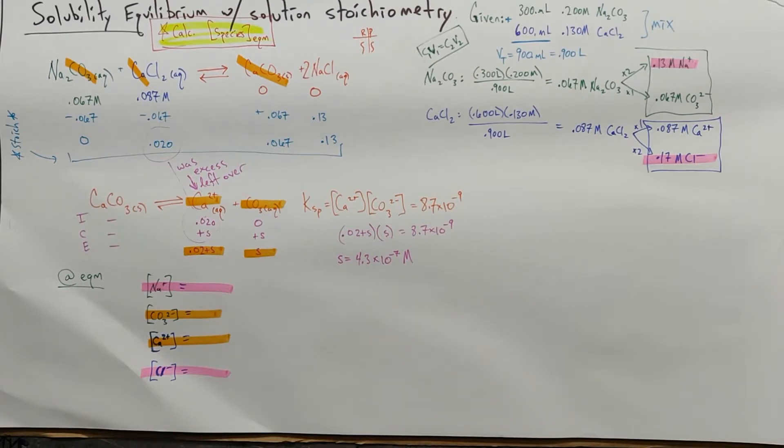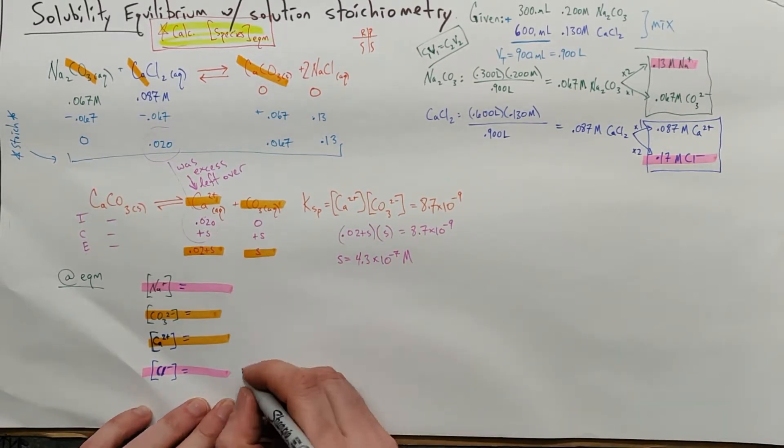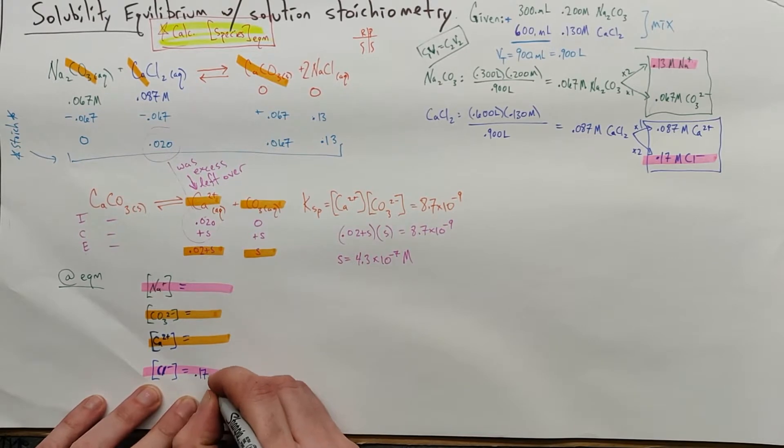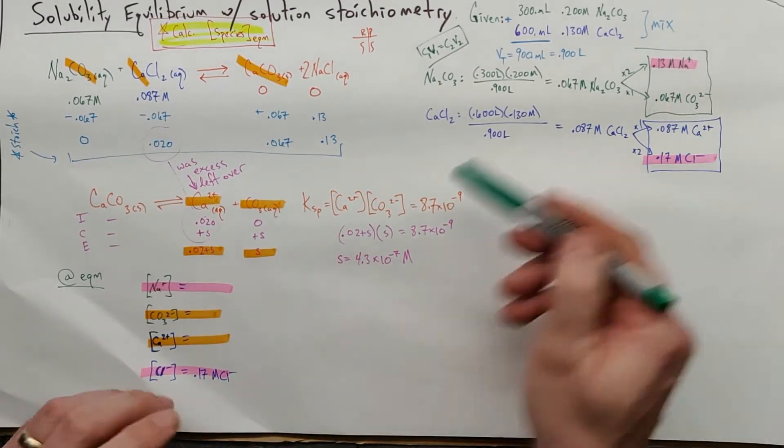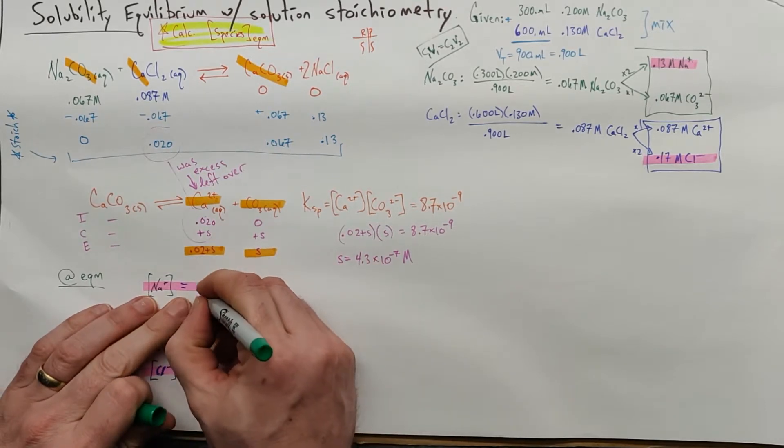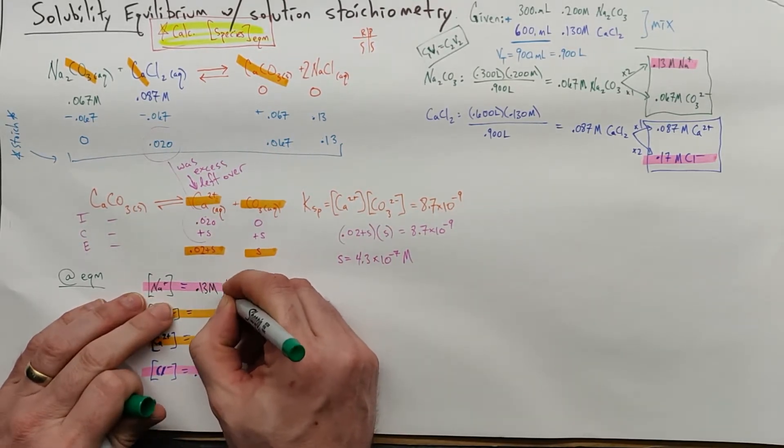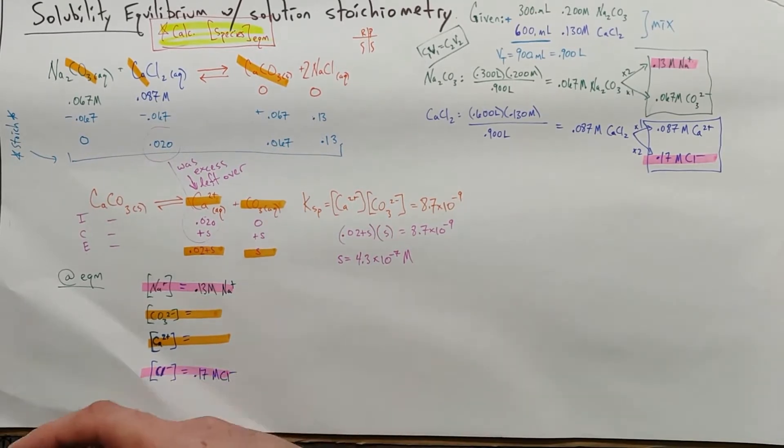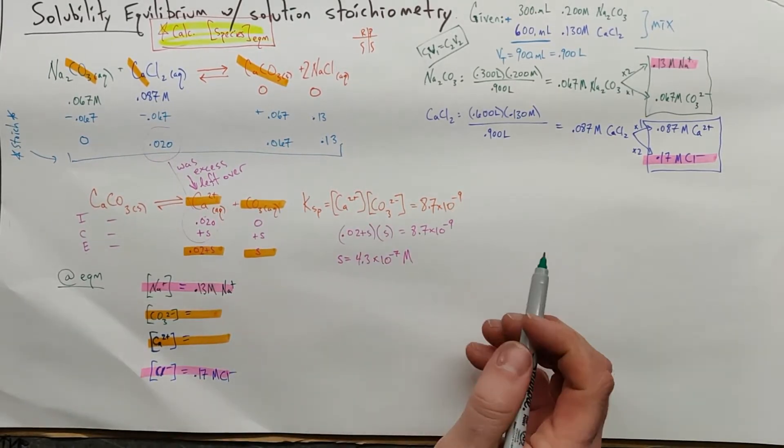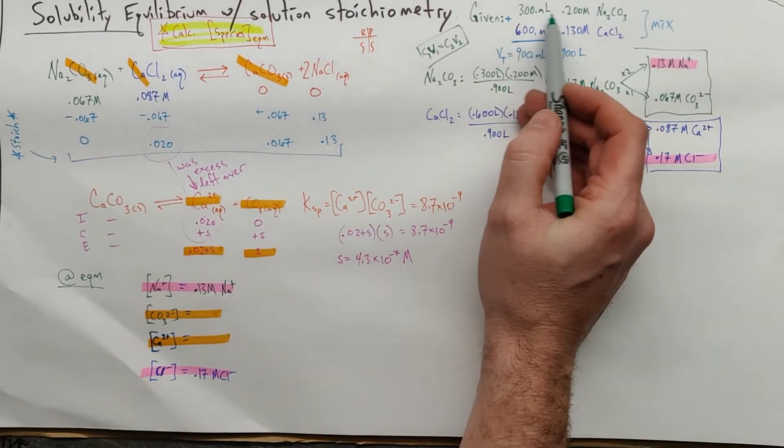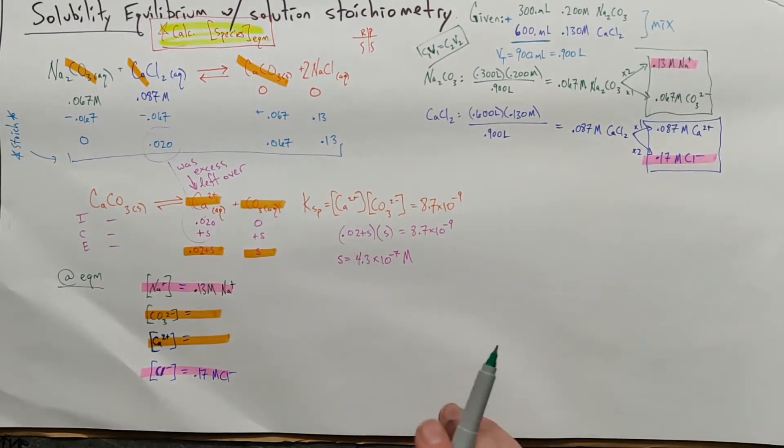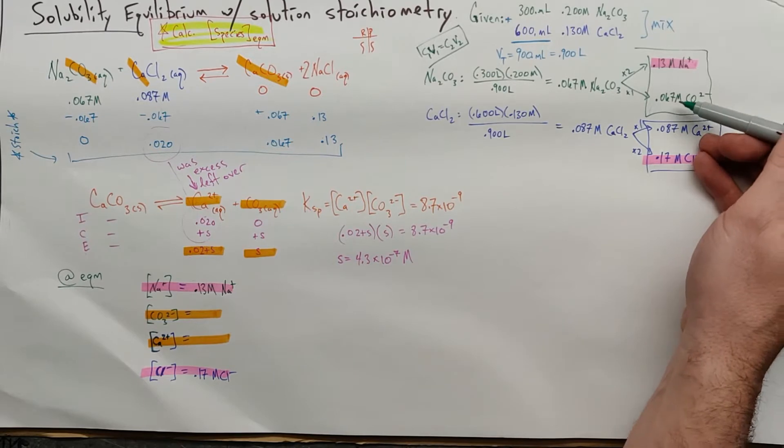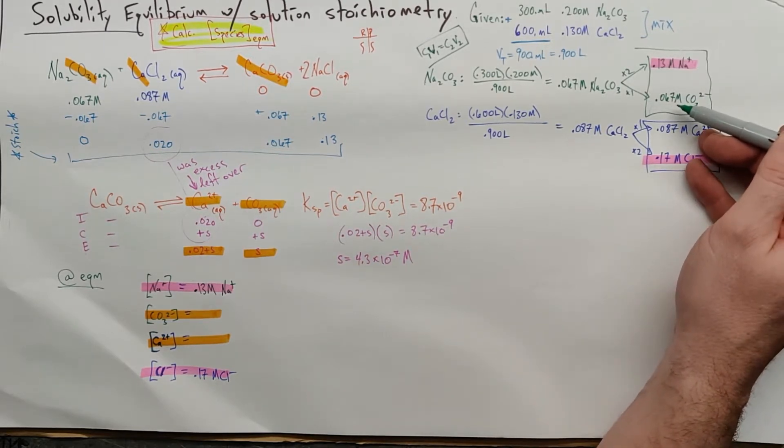The chloride ions from what we wrote before, 0.17 molar Cl-. And our sodium ions from before, 0.13 molar for our sodium ions. Those were spectators. Everything that you had in the beginning is there at the end. And in the beginning we had this many moles, we divided it by 0.9 liters, that was our final volume. That's the numbers we have there.